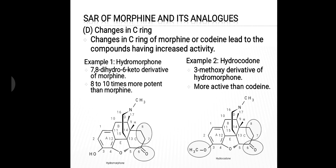The second example is hydrocodone. Hydrocodone is the 3-methoxy derivative of hydromorphone. Comparing its structure with hydromorphone, only one change is needed: at the third position, simply convert the hydroxyl group into a methoxy group. Hydrocodone is more active than codeine.